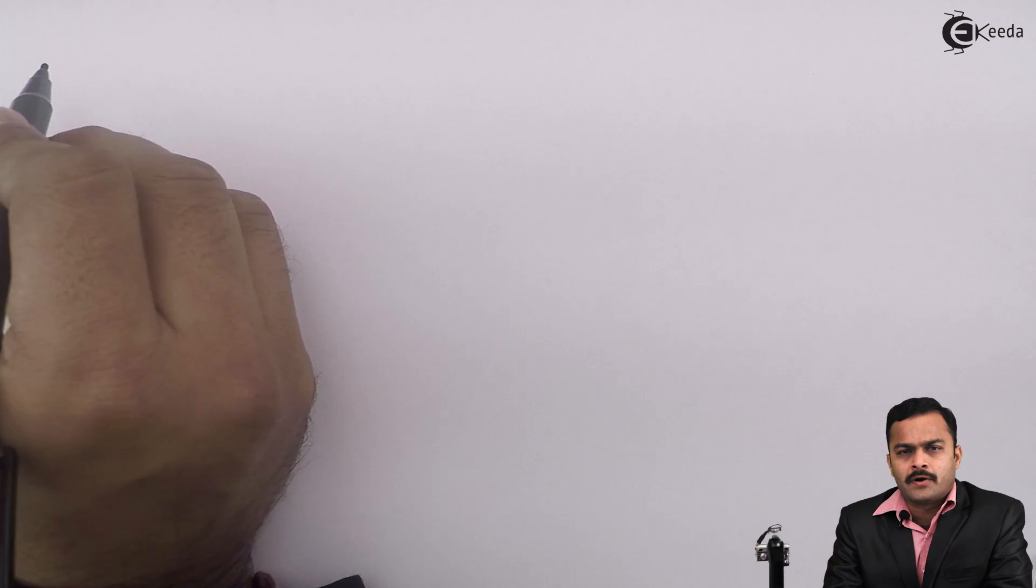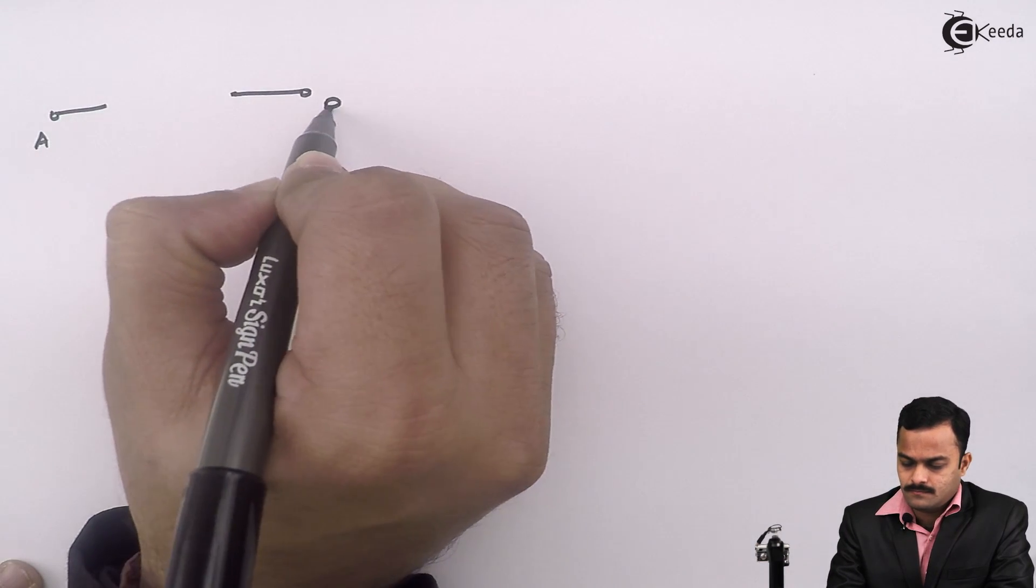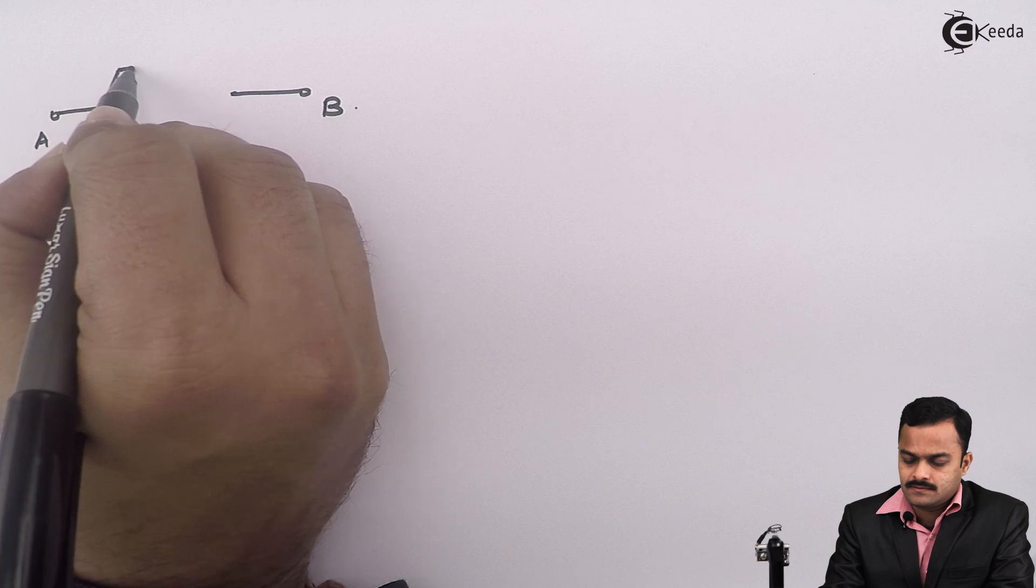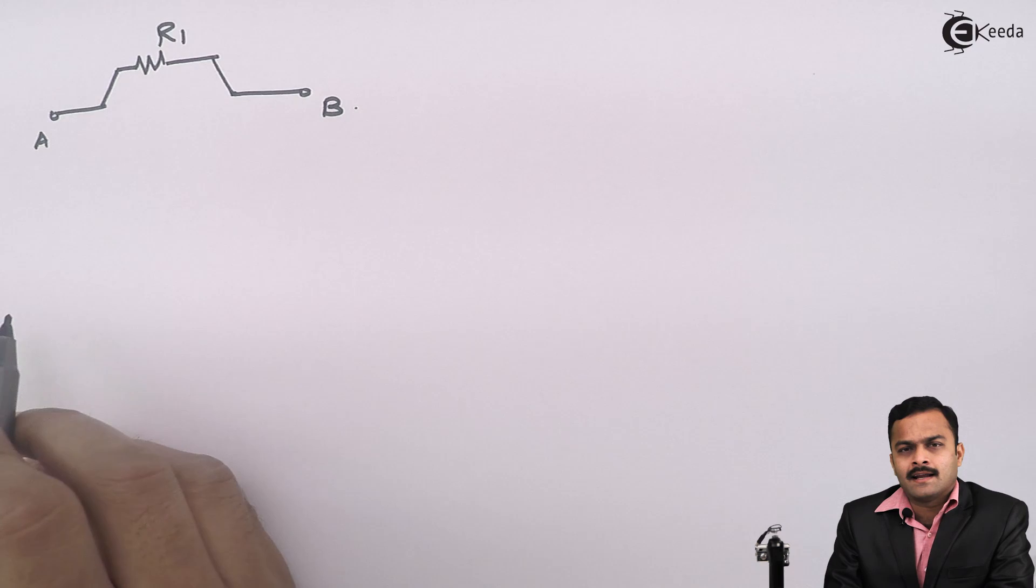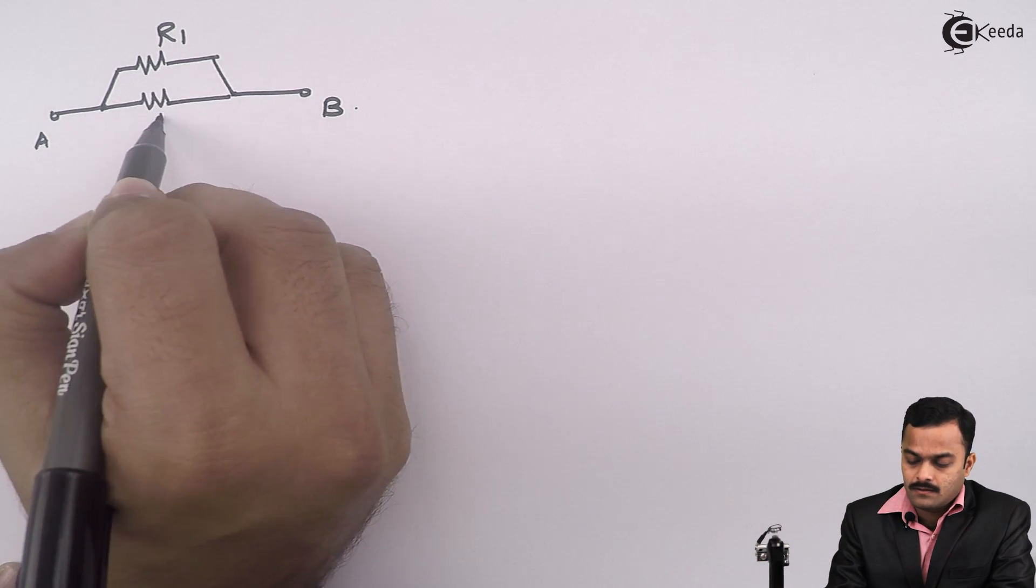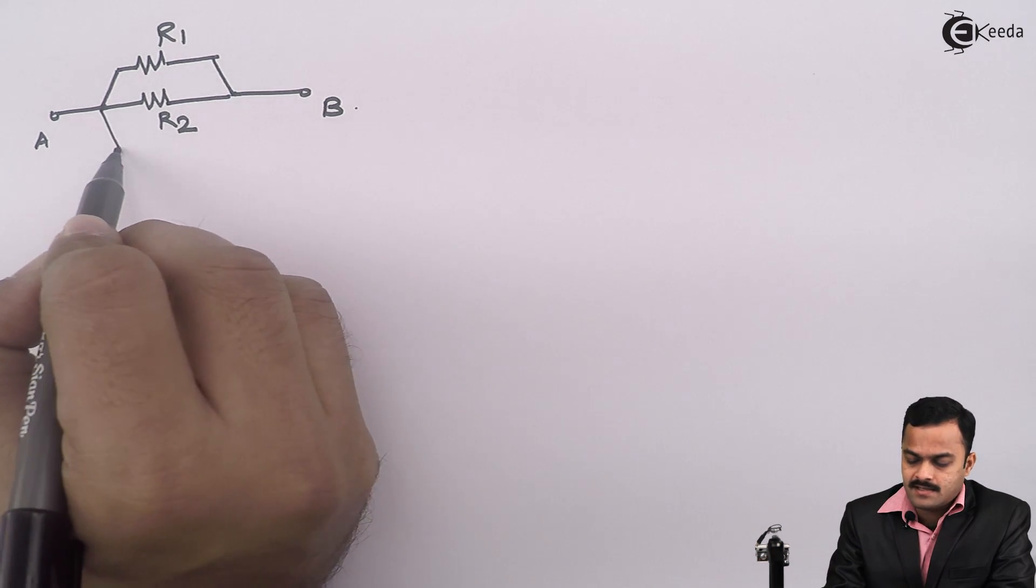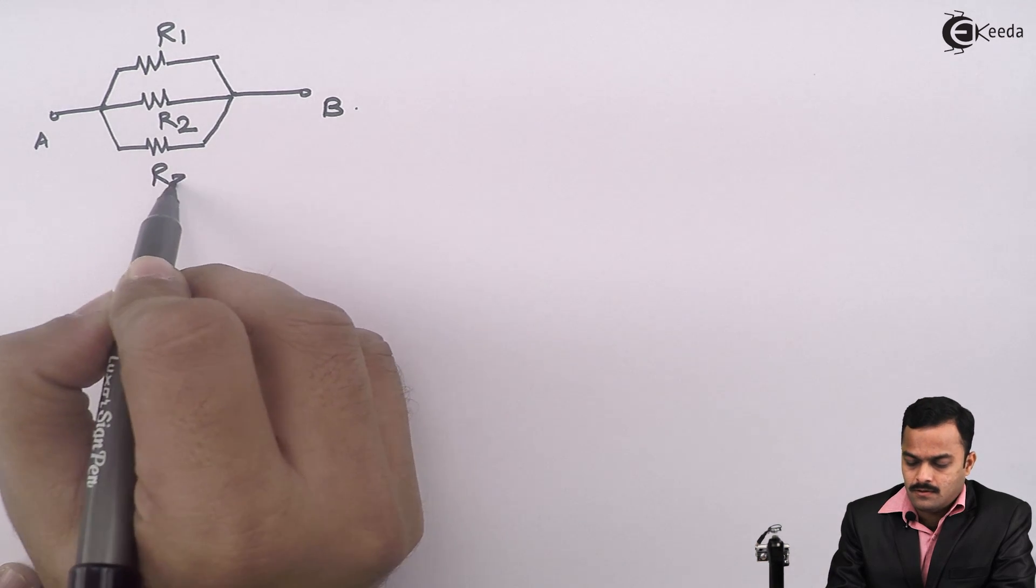Let's consider a circuit with two points, point A and point B. Suppose I'm considering some resistances named R1, connected like this, one more resistance R2 like this, and let's have R3.